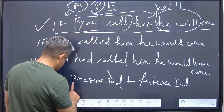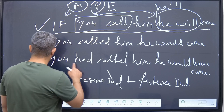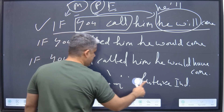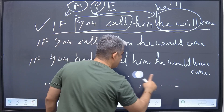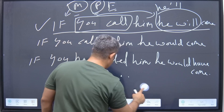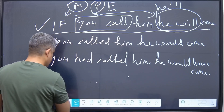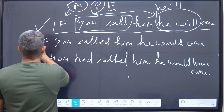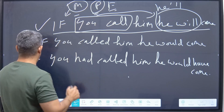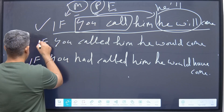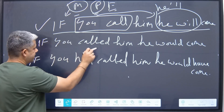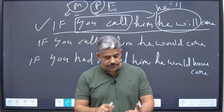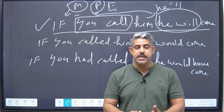Now let's go to the second one. The second one is: if you called him, he would come. Could you tell me the meaning for this one? Look for the meaning first.